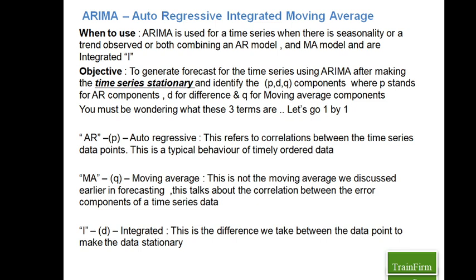The second term is the MA term, which is called Moving Average. The components are notated by the small letter Q. Don't get confused — this is not the moving average we discussed in ratio-to-moving average; that's different. Here, the term moving average stands for the errors — specifically, the correlation between the errors. AR was talking about the correlation between data points, whereas moving average talks about the correlation between the errors.